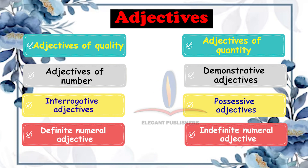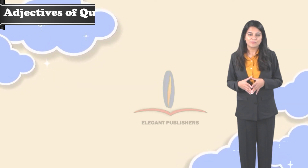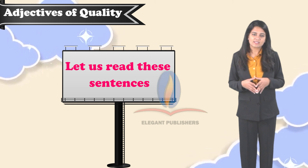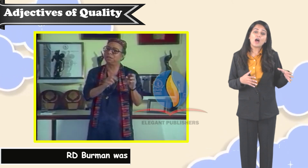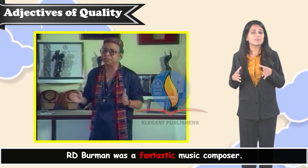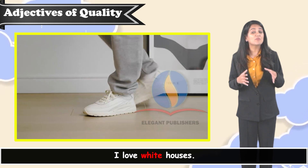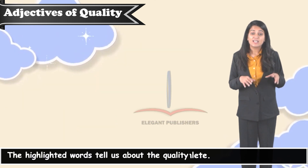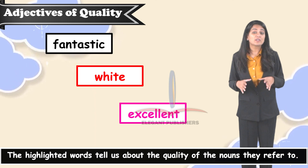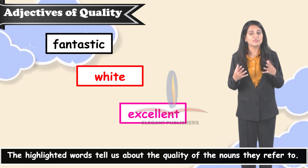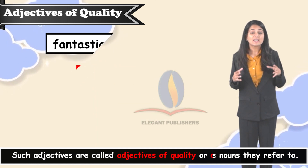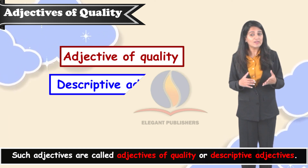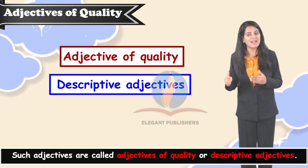Adjectives of quality. Let us read these sentences. R.D. Berman was a fantastic music composer. I love white shoes. She is an excellent athlete. The highlighted words tell us about the quality of the nouns they refer to. Such adjectives are called adjectives of quality or descriptive adjectives.